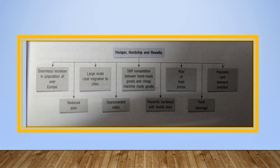Then coming to hunger, hardship and revolt: enormous increase in population all over Europe reduced jobs and brought about large-scale rural migration to cities, overcrowding them. Stiff competition between handmade goods and cheap machine-made goods. Peasants were burdened with feudal dues, the rise of food prices, food shortage. Peasants and weavers revolted.